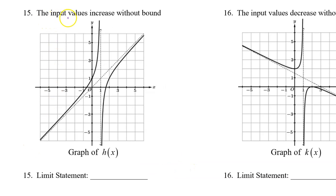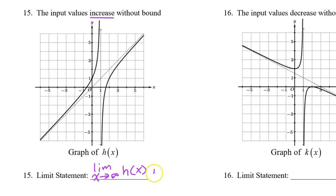For number 15, the input values increase without bound. So this is a right-end behavior again. So we write the limit as x approaches infinity of h of x. But on the right-hand side, the output values increase without bound. So the limit is positive infinity. When the limit is infinity, we should write the word 'is' instead of an equal sign. Save the equal sign for numbers.